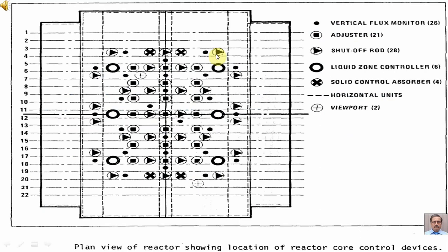Plan view of reactor showing location of reactor core control devices. We have vertical flux monitors — 26 of them — located as shown.